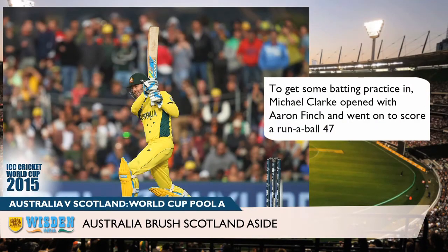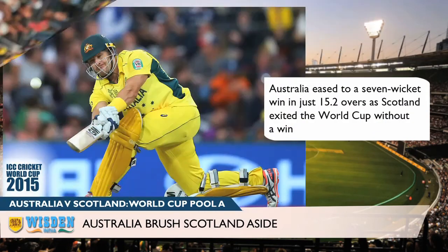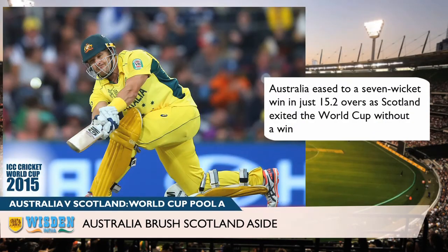To get some batting practice in, Michael Clarke opened with Aaron Finch and went on to score a run-a-ball 47. Australia eased to a 7-wicket win in just 15.2 overs as Scotland exited the World Cup without a win.